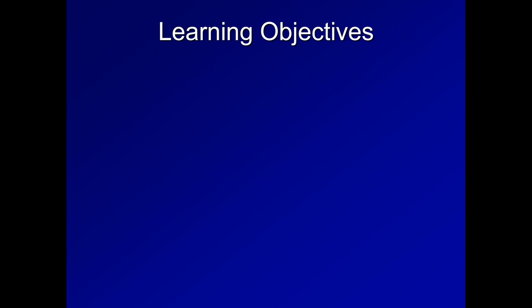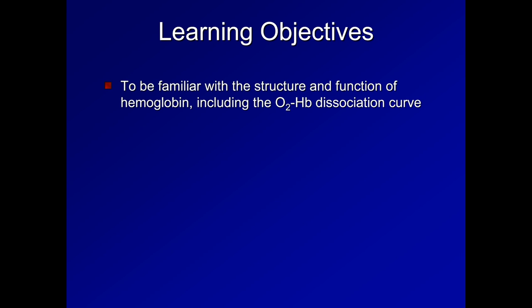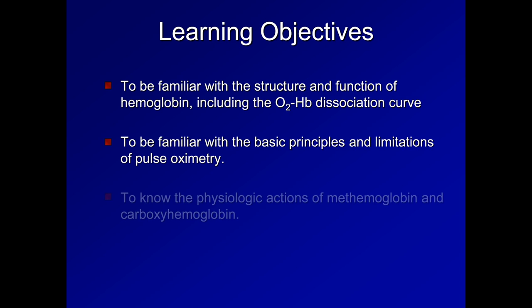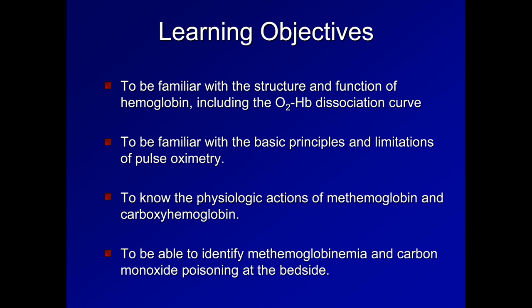The learning objectives are to be familiar with the structure and function of hemoglobin, including the oxygen hemoglobin dissociation curve, to be familiar with the basic principles and limitations of pulse oximetry, to know the physiologic actions of methemoglobin and carboxyhemoglobin, and finally to be able to identify methemoglobinemia and carbon monoxide poisoning at the bedside.